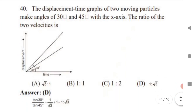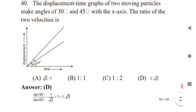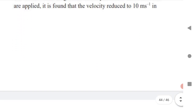Very important question: a displacement-time graph shows two particles making angles of 30° and 45° with the x-axis. The ratio of their velocities equals tan 30° / tan 45° = (1/√3) / 1 = 1/√3. This is a simple but important result to remember.